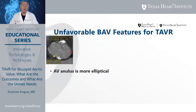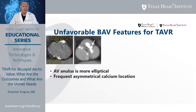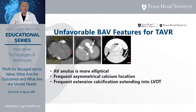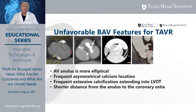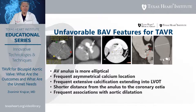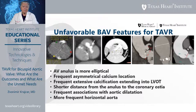What are the unfavorable bicuspid aortic valve features that complicate TAVR? One is an aortic valve annulus that is more elliptical. Another is frequent asymmetric calcium location. The third is frequent extensive calcifications extending into the left ventricular outflow tract, which can lead to potential rupture during balloon dilatation of the valve. There is also a more frequent association of shorter distance from the coronary ostia to the annulus, frequent association of aortic dilatation of various types, and more frequent horizontal aorta.